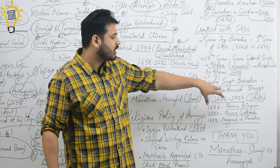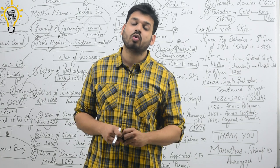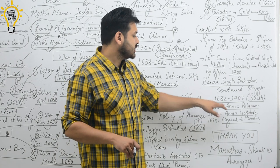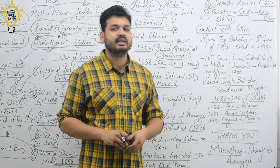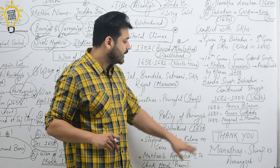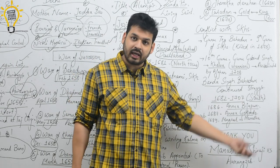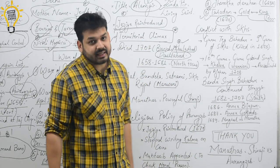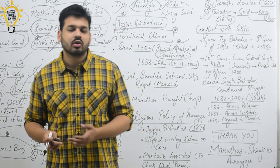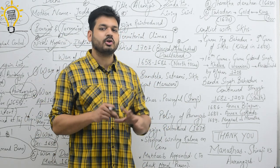After focusing so much on the north, at the end Aurangzeb focused on the south. From 1682 to 1707 AD his focus was on the south. In 1686 he annexed Bijapur, in 1687 he annexed Golconda, and from 1689 he tried to annex the Marathas but was never successful. There was a war between Marathas and Aurangzeb.